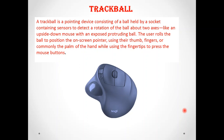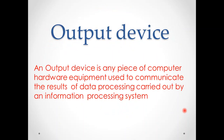After input devices, there are also output devices. When we give input and it is processed, we need to see the result. For this, output devices are necessary to display or generate the result. An output device is a part of a computer system or hardware equipment used to generate the result of data after processing.